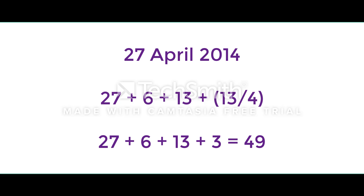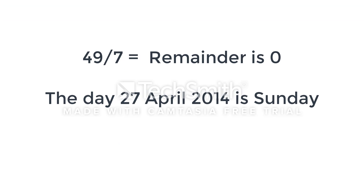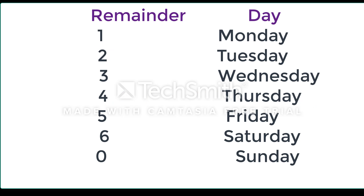The calculation is: 27 plus 6 plus 13 plus 3 (which is 13 divided by 4). Adding all these numbers gives you 49. Divide 49 by 7 — the remainder is 0, so 27th April 2014 is a Sunday. If the remainder is 1 it is Monday, 2 is Tuesday, 3 is Wednesday, and so on.